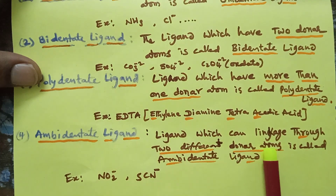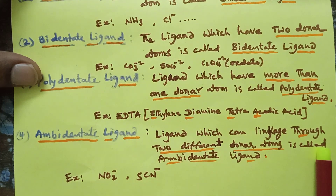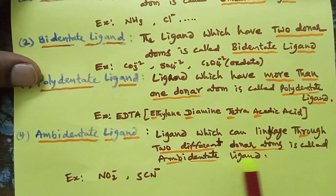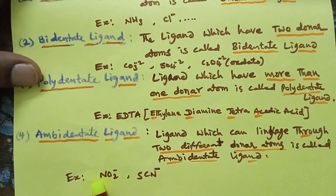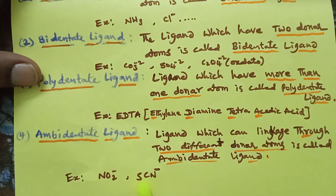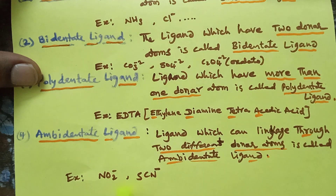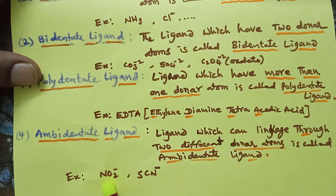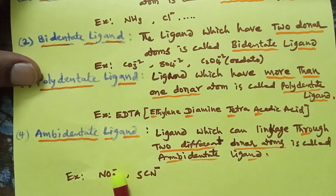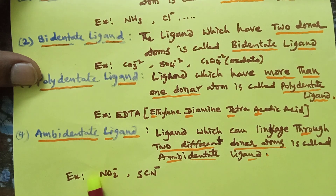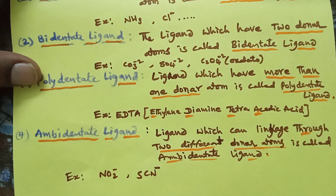The last type is the ambidentate ligand. A ligand which can link through two different donor atoms is called an ambidentate ligand. Examples are the nitrite ion and the thiocyanate ion. In the nitrite ion, the coordinate bond can be formed through either nitrogen or oxygen.